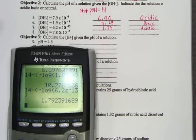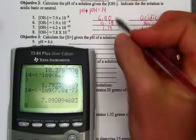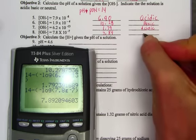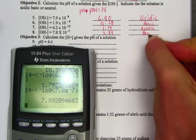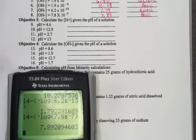And the last one in objective 2, we have 14 minus, and then I hit parenthesis, negative log of 7.8 E negative 7, and that takes the 14 minus pOH, and I would hit to find 7.89, and that's slightly basic. Again, the only time we would record neutral is if it's 7.00.